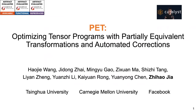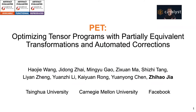Hi, everyone. My name is Zhihao, and today I'm super excited to present PAT, a tensor program optimizer with partial equivalent transformations and automated corrections. This is a joint work with colleagues from Tsinghua, Carnegie Mellon, and Facebook.